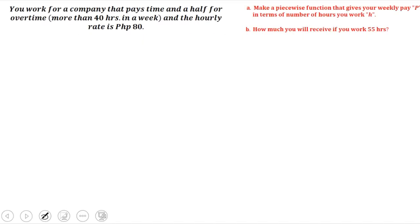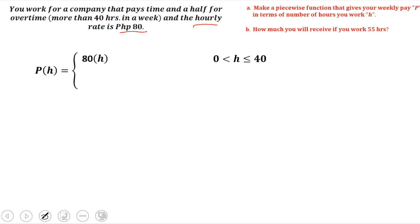First, we need to create a piecewise function to compute your weekly pay in terms of the number of hours. If you work less than or equal to 40 hours, your weekly pay is just the number of hours times your hourly rate. Since the hourly rate is 80 pesos, that's 80 times H, where H is the number of hours.